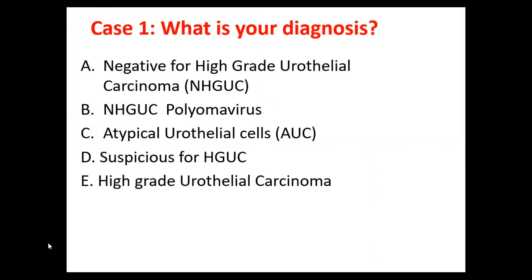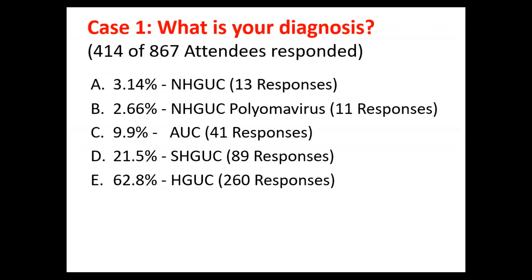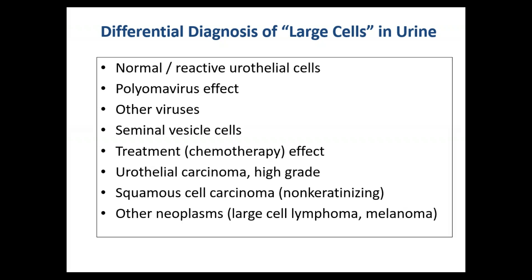The diagnostic options for this case are: negative for high-grade urothelial carcinoma without qualifier, negative with polyomavirus qualifier, atypical urothelial cells, suspicious for high-grade urothelial carcinoma, and high-grade urothelial carcinoma. During the original webinar with over 800 attendees, about 400 replied, and the vast majority picked high-grade urothelial carcinoma, followed by suspicious for high-grade urothelial carcinoma. Let's see if the original attendees were right.